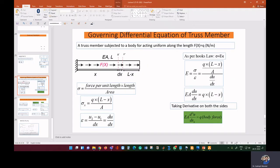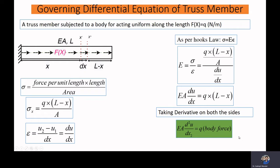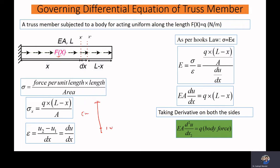We consider one truss member subjected to a body force. The body force magnitude is fx, with value q Newton per meter — that is, load given in Newton per meter. For example, if you have a bar of five meter length, this point will experience zero force, the one-meter point will experience one Newton, two meters gives two Newton, three Newton, four Newton, and the top point experiences five Newton.